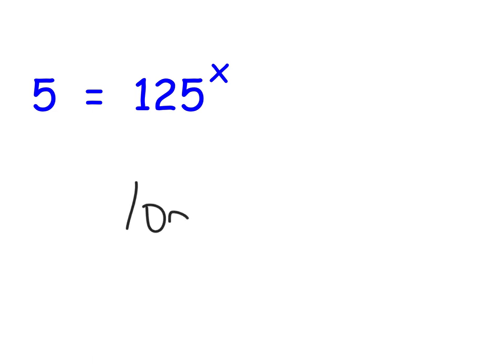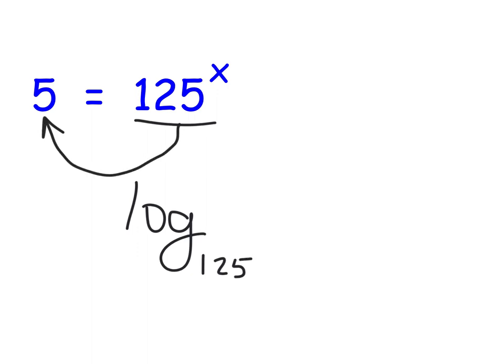Do you remember that you can make a log out of things? We just had a test on this. If I said make this into a log, you'd think — what should I use for the base? The 125, because it has the power on it. Everything has a power of 1, so everything is in a way a base. But in this problem you do log base 125. Then you remember the circle of logs — of 5 equals x.